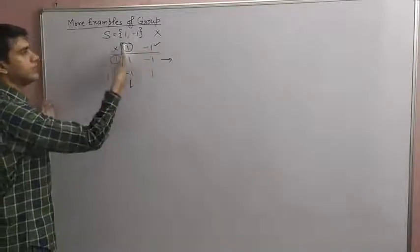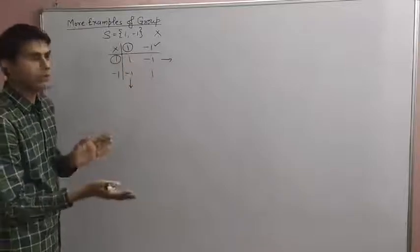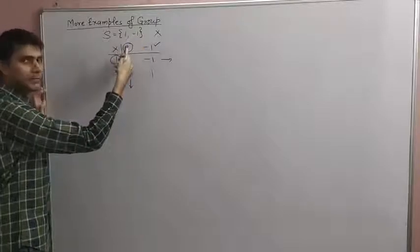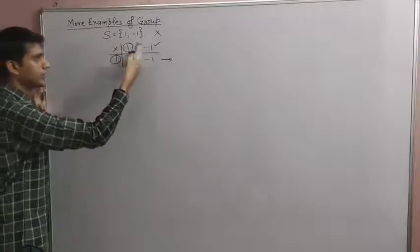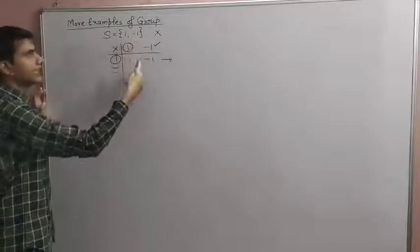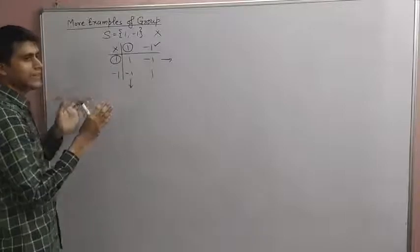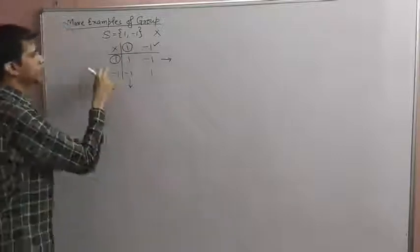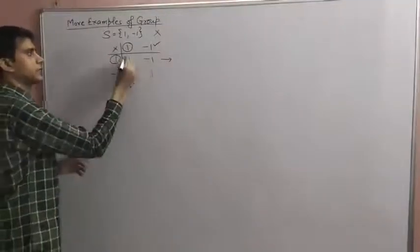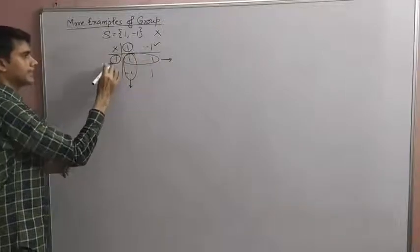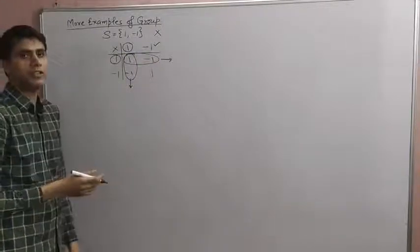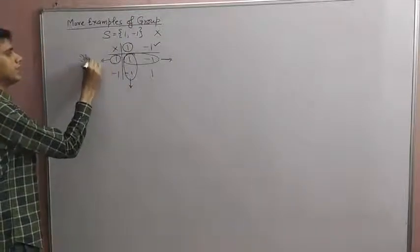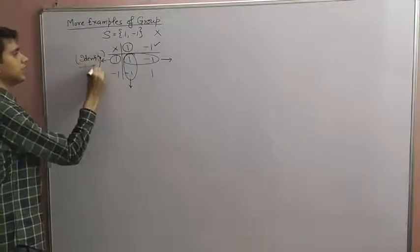When we multiply any element of S by this particular element from the left or the right, the result remains unchanged — the elements of S are unaffected. So this element — which is 1 — is the identity of this set under multiplication.